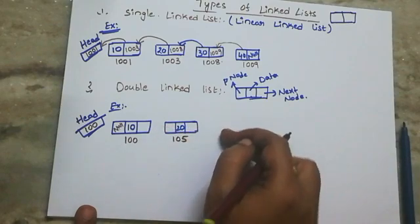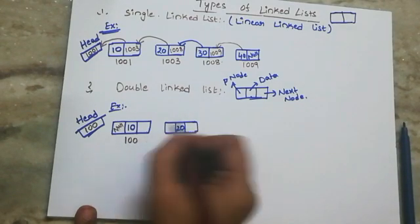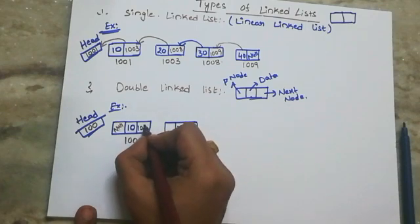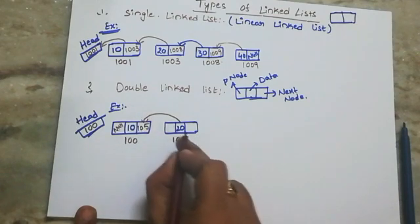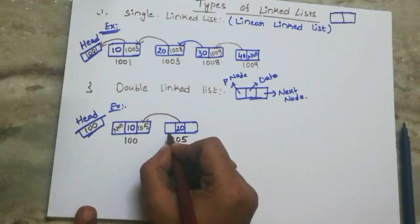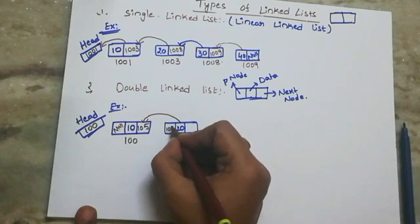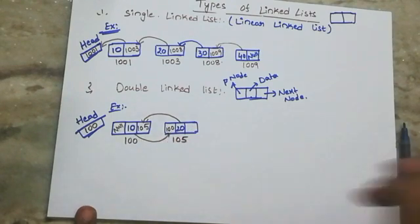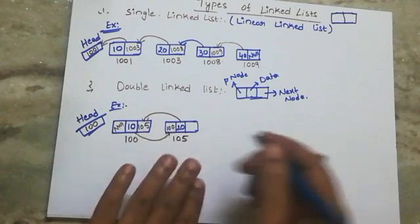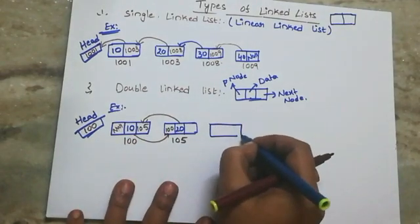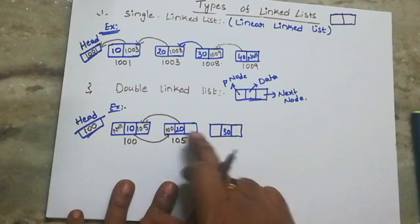The previous node of 20 is 10. So we store address 100 here. The next part of node 20 we will place null for now. I will create the third node — that is node 30. Node 30 has a previous node 20 and a next node part.